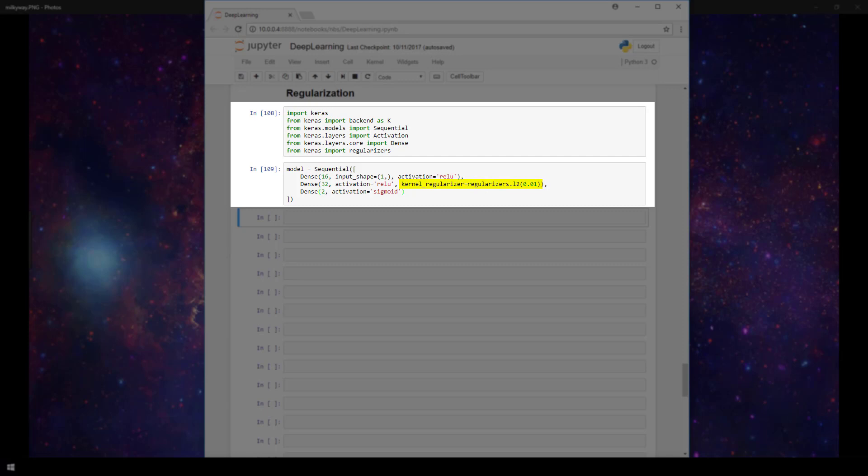Here I'm specifying that I want to use L2 regularization by setting the parameter equal to regularizers.L2. I'm then specifying 0.01 to be the regularization parameter, which we denoted earlier as lambda. And that really is all there is to it for adding regularization to one of our layers in Keras.